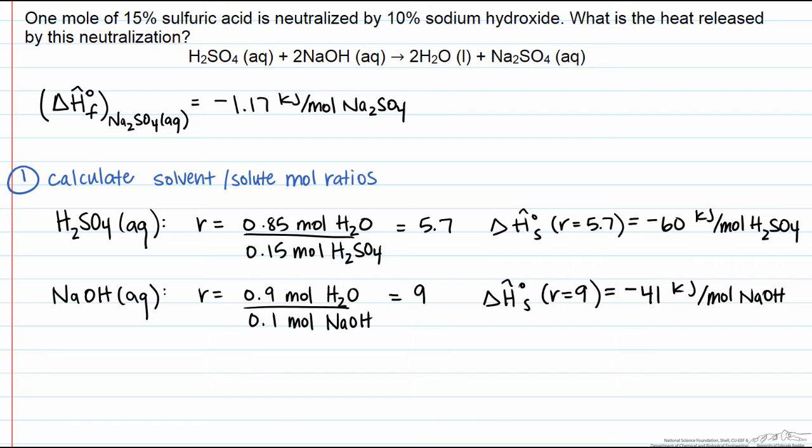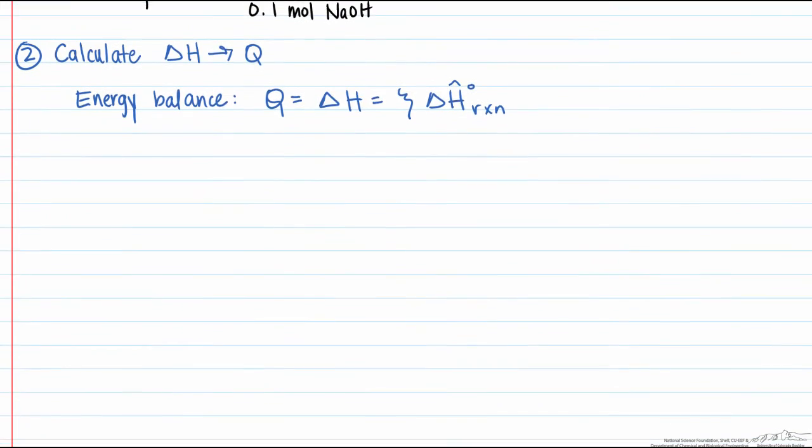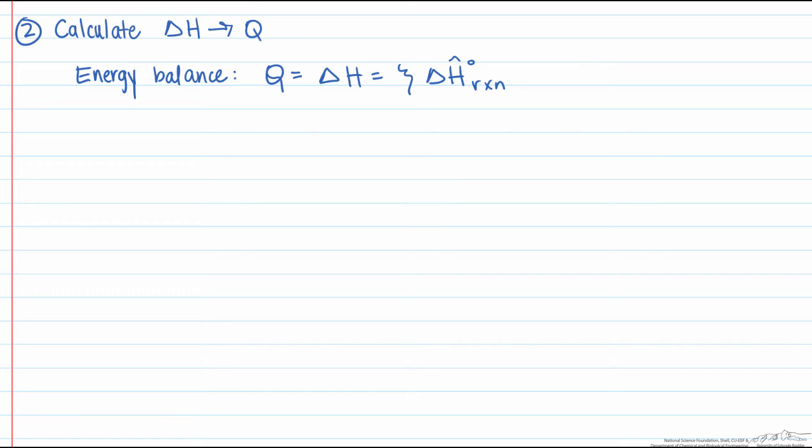Now we need to determine the Q. Q equals the extent of reaction times the heat of this particular reaction. How do we find the heat of reaction? That equals the sum of the heat of formation of our products minus the sum of the heat of formation of our reactants.